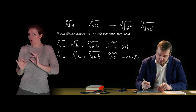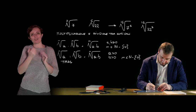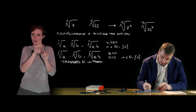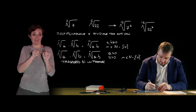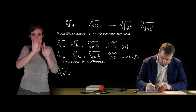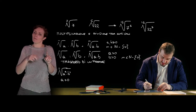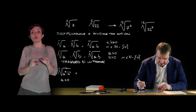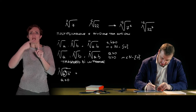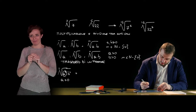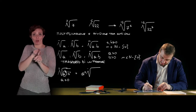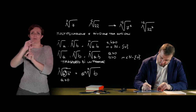Another very important operation is transporting a factor from inside the radicand to outside the radical sign. For example, the cube root of a⁹ times b² — defined only for a ≥ 0 — allows us to bring outside all factors whose exponent is a multiple of n. Since 9 is a multiple of 3, a⁹ can be brought outside as a³, leaving the cube root of b² inside.